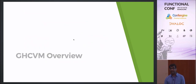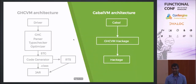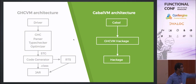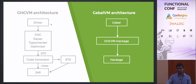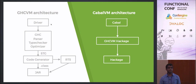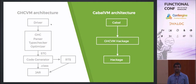Now I'll talk about how GHCVM was architected and how the components work together. GHCVM consists of many components. The top half is all from GHC — I haven't had to redo that. It starts with the driver, which manages the compilation of different components. I had to modify it to also compile Java files, so you can actually compile both Java and Haskell files with GHCVM. The pipeline then goes to parser, type checker, and optimizer. The output of that entire process is a thing called STG code.